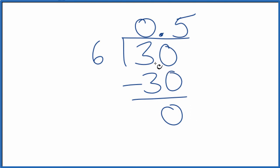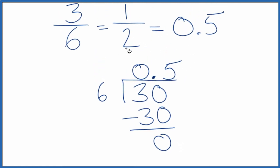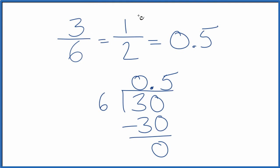So three divided by six is 0.5. It means the fraction three-sixths, or one-half, that's equal to 0.5, the decimal.